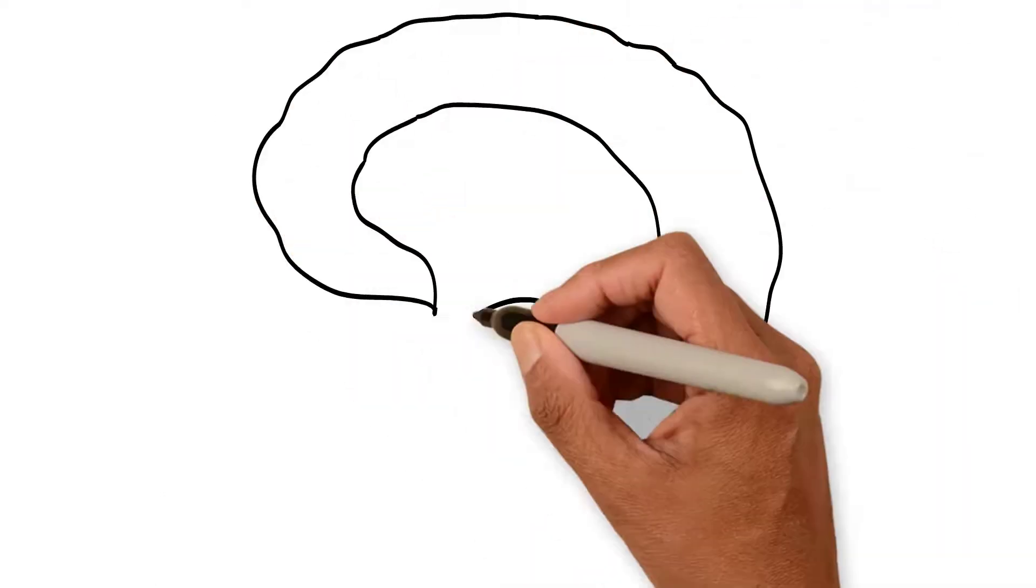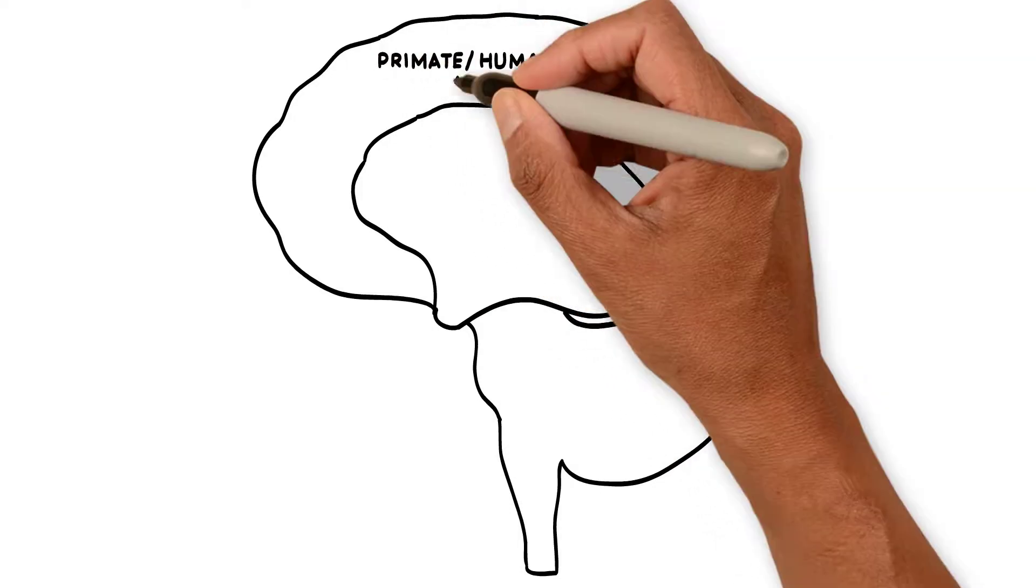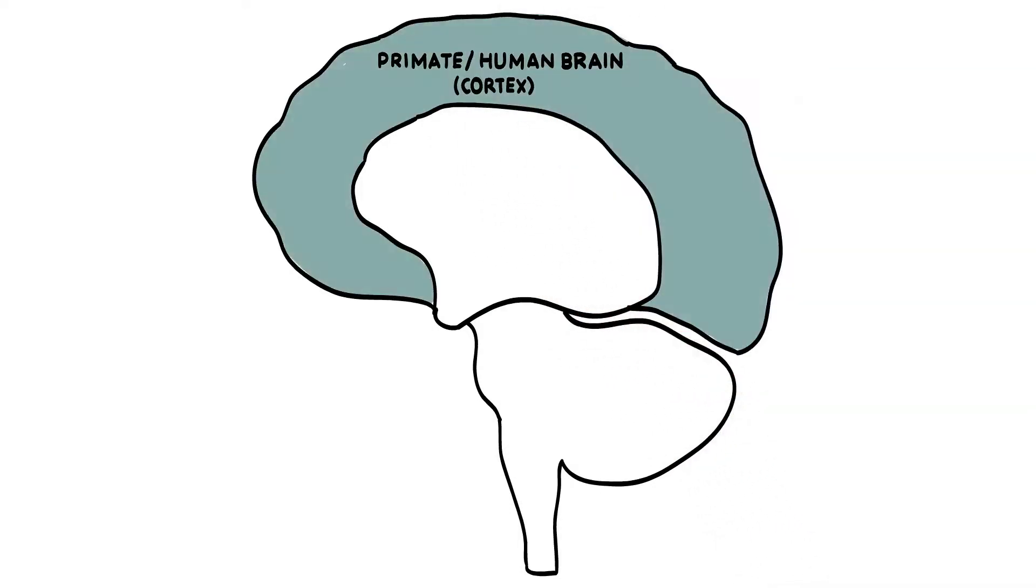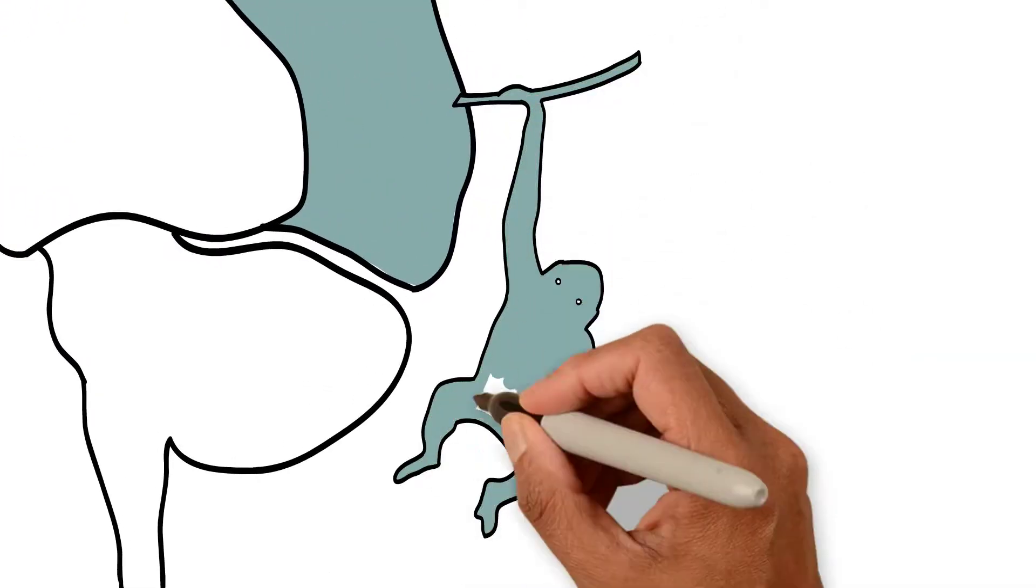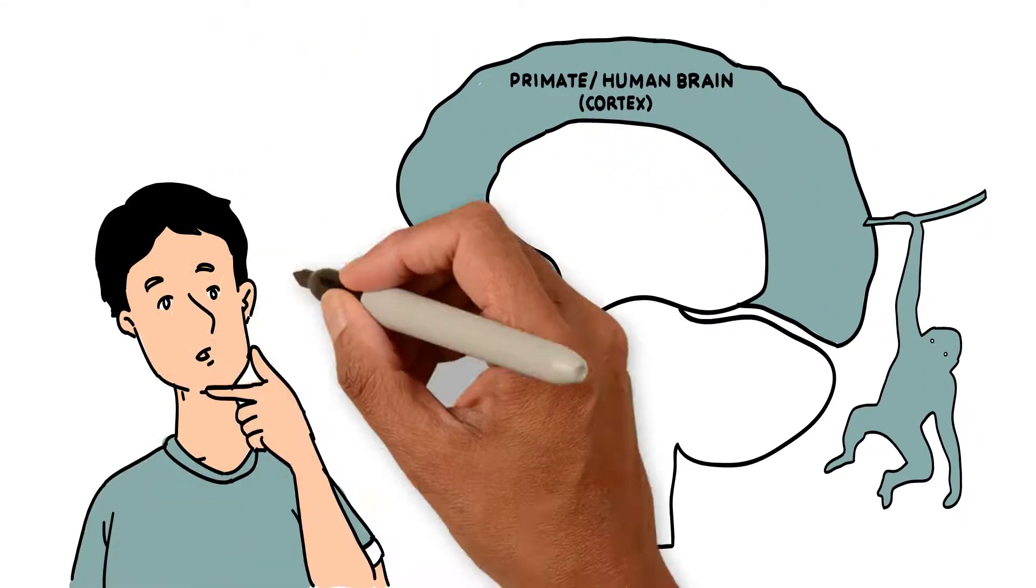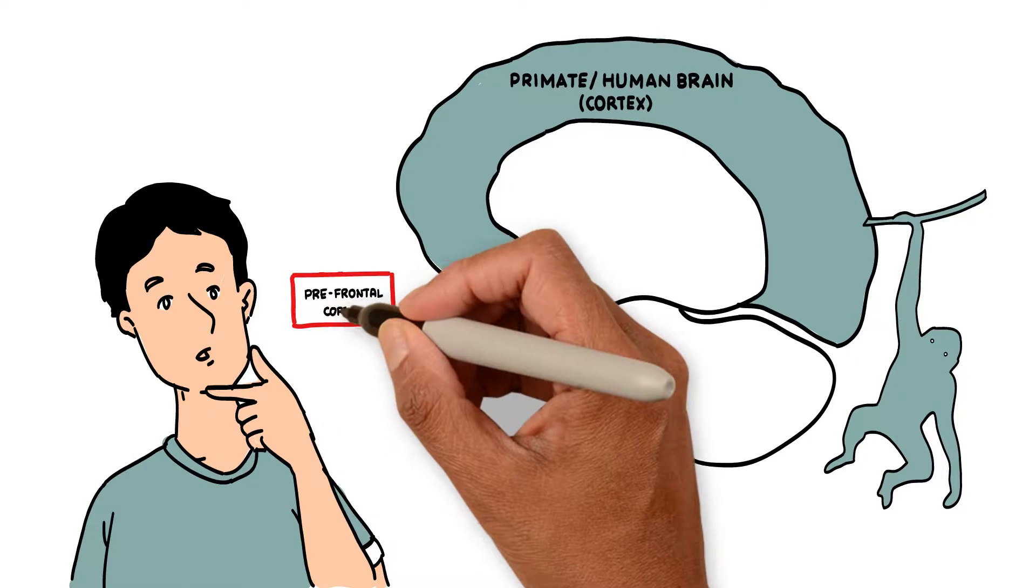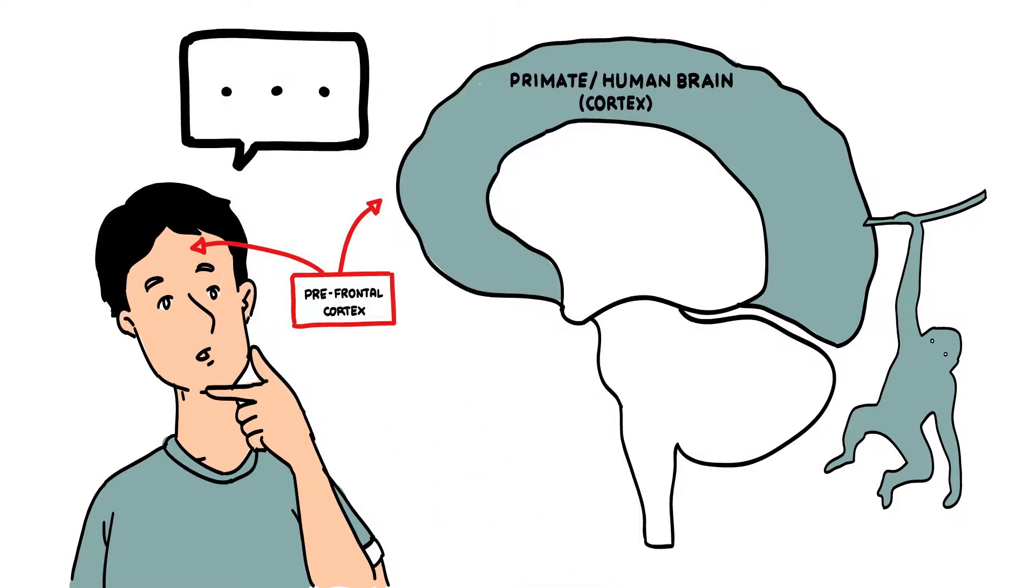There are three main parts to your brain. Over the top is your cortex. This is in all humans and primates, so we'll call it the monkey part. This part, just behind your forehead, is called the prefrontal cortex, and it's the part that is responsible for logic, reasoning and thinking.